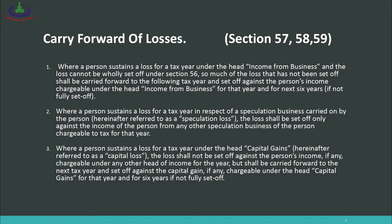Number 3: Where a person sustains a loss for a tax year under the head capital gains, as discussed earlier, it cannot be set off against any other head. If you have a capital loss, and there is capital gain available in the same year, set them off against each other. If no capital gain exists, carry the capital loss forward to the next year and adjust it against future capital gains. If there are still no capital gains, you can carry it forward for a maximum of six years.